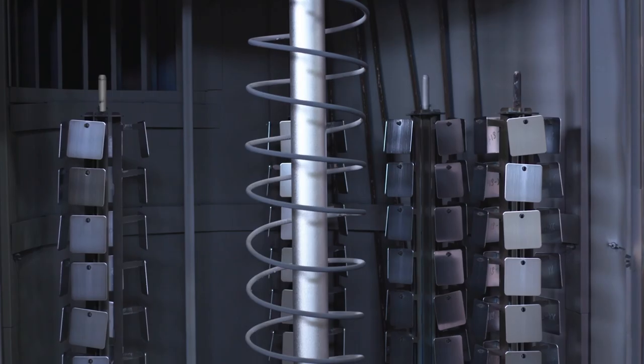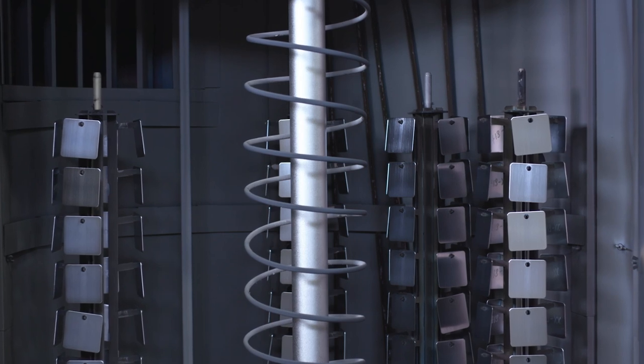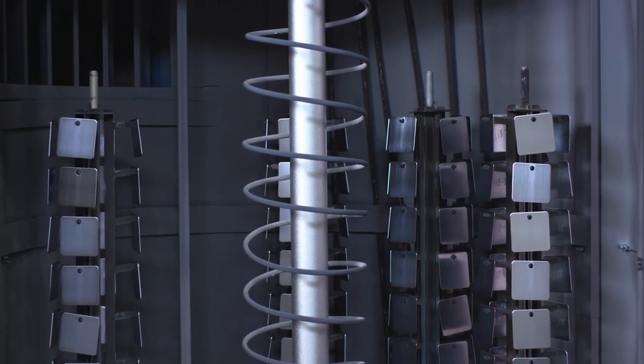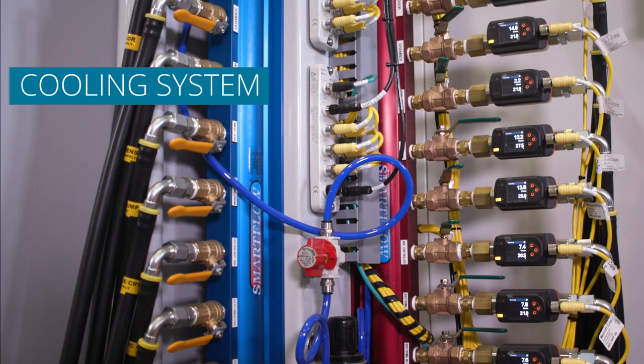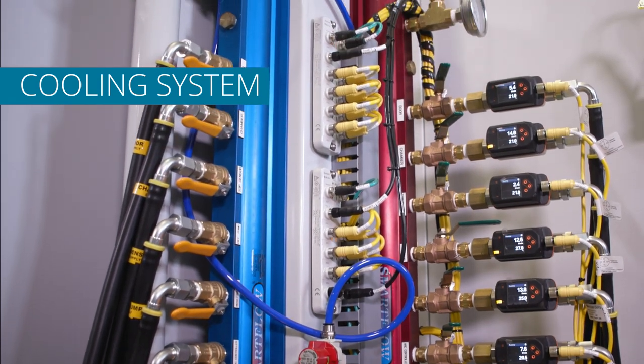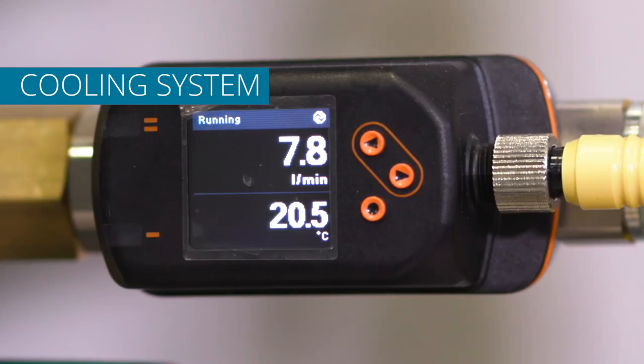The stainless steel vacuum chamber is the heart of the system where coatings are applied. The PVD process generates heat. The cooling water distribution system cools the chamber walls, targets, power supplies, and other components.